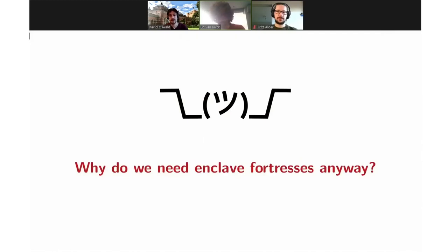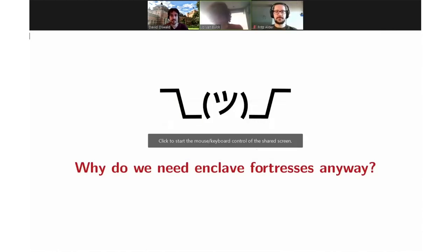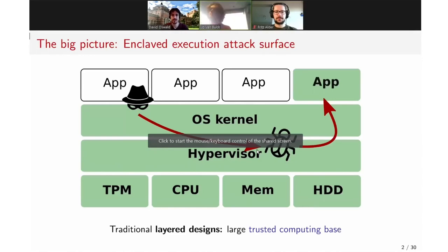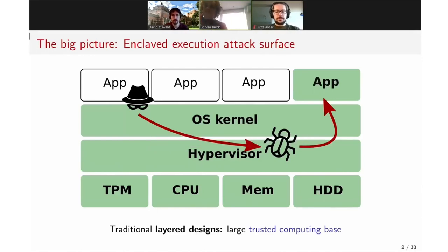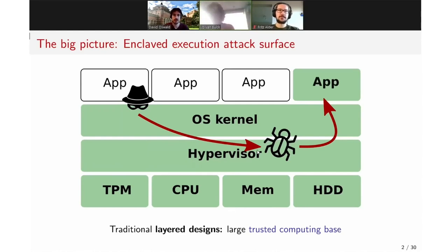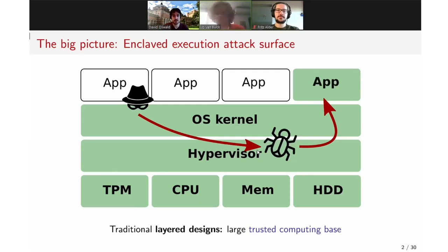We should talk about why we need such enclave fortresses anyway. In a traditional operating system or computer architecture, you have a very large trusted computing base. On the laptop you likely use to watch this talk, you trust the kernel, maybe a hypervisor, and the whole hardware under the system — CPU, memory, hard drive, trusted platform module, and the likes. The problem with such a large TCB is you can have vulnerabilities basically everywhere, and malware hiding in all these parts.